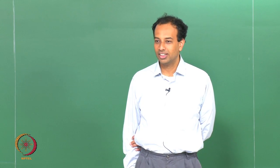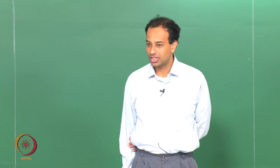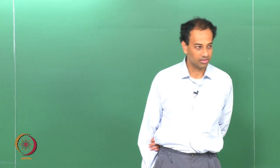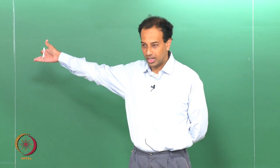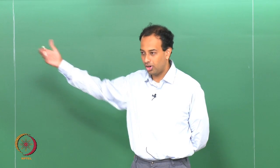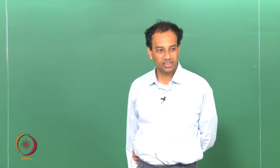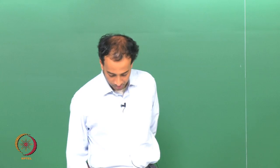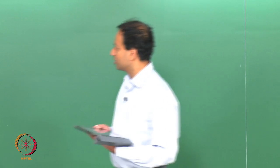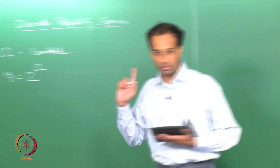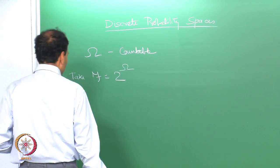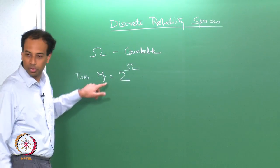I said earlier that in general not all subsets of the sample space are considered events — only the ones in the sigma algebra F are events. In our case we are taking F equal to 2 power omega, so all subsets of omega are events and we will assign probabilities to all subsets of omega. Now, I have to tell you how to assign probabilities in the case of a countable sample space.